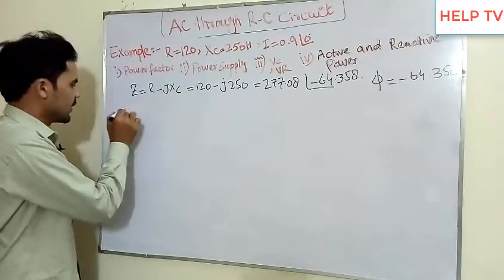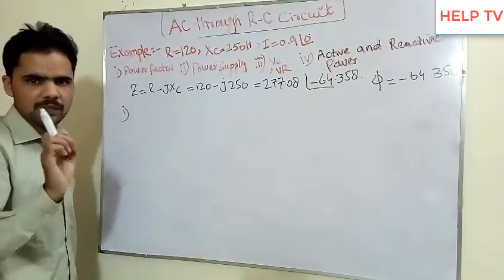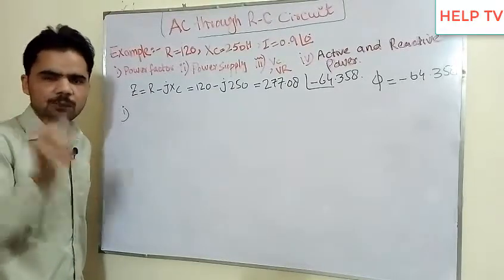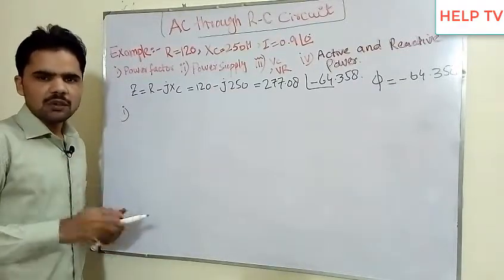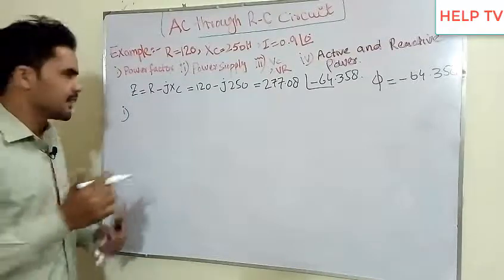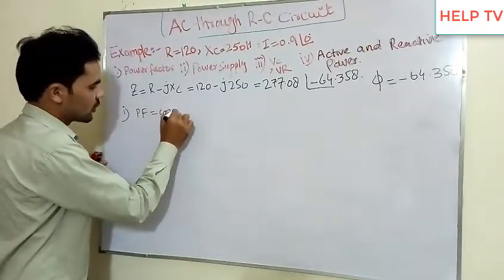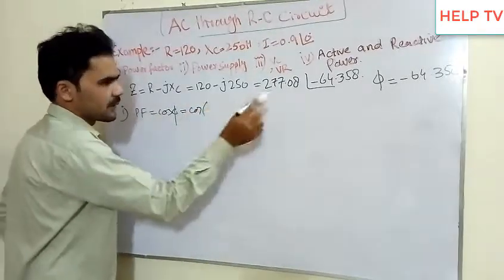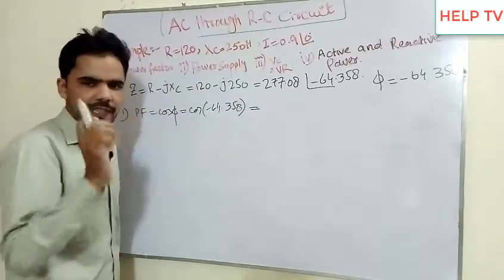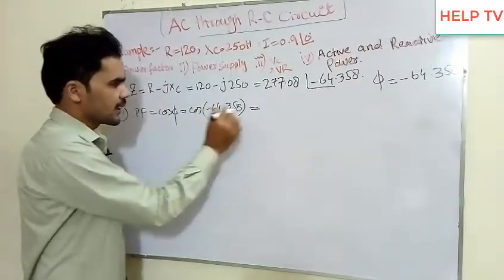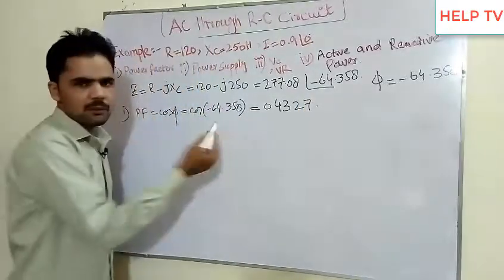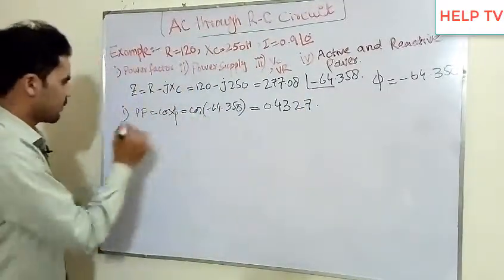Now to find the power factor, we use the formula: power factor equals cos of phi. Using cos of minus 64.358, the negative sign cancels out, and the value we get is 0.4327. This is our first calculated parameter.